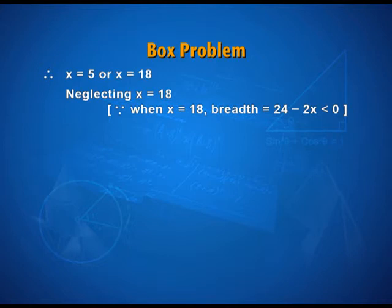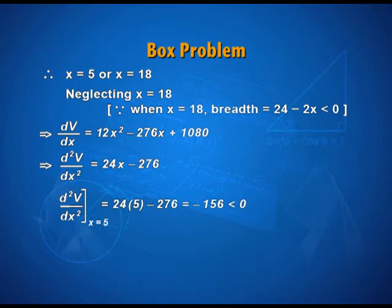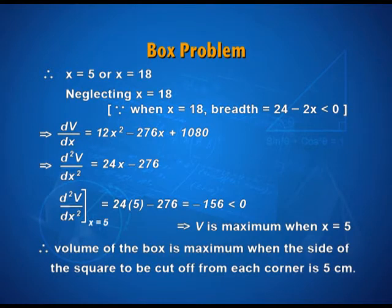Is x = 5 a point of maxima or minima? This can be decided by the second derivative test. The second derivative is 24x − 276. At x = 5, it is a negative quantity — less than 0. The second derivative test implies that volume V is maximum when x = 5. We are interested in finding the side of the square to be cut off from each corner — that side must be 5 cm so that the volume is maximum. If you also want the maximum volume, put x = 5 into the volume function.